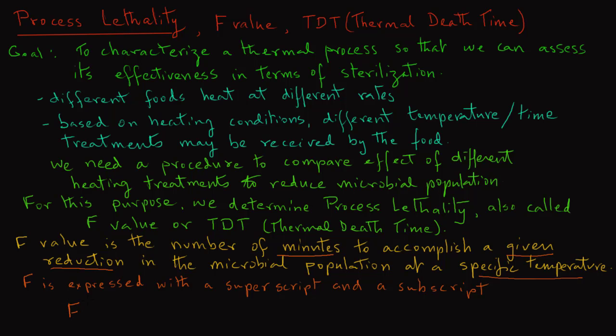F value is normally expressed with a superscript and a subscript. We have F with a subscript T and a superscript lowercase z, where z is the z value of the microorganism and T is the temperature. In food science literature we write F_T^z, and if the temperature T is selected as some reference temperature, then we can also write F^z with T reference in the subscript.